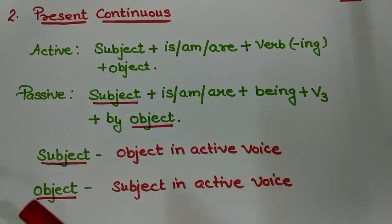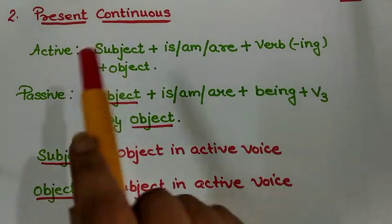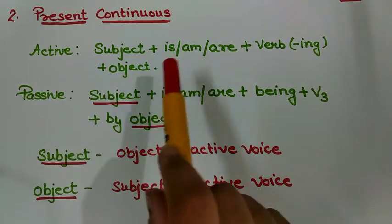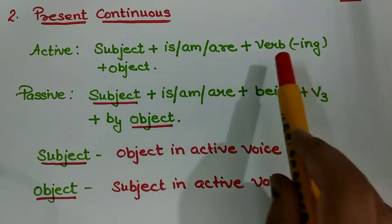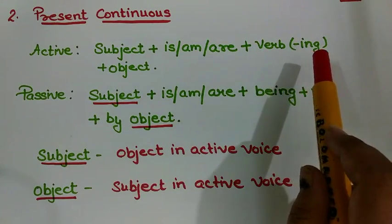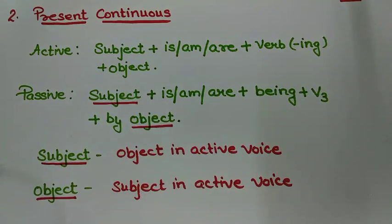In present continuous tense, active voice acts as: subject, then helping verb is/am/are, then comes verb in the ing form, and then comes object.